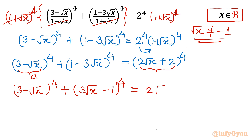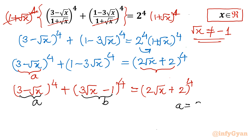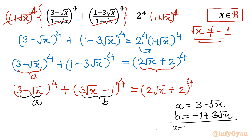Now you can check: (2 root x plus 2) whole power 4 on the right hand side. Once I give the substitution — let us consider a as the first bracket and b as the second bracket — you can see that a is (3 minus root x) and b is (3 root x minus 1). Adding both: a plus b equals 2 plus 2 root x, which matches our RHS. So this is our a plus b.